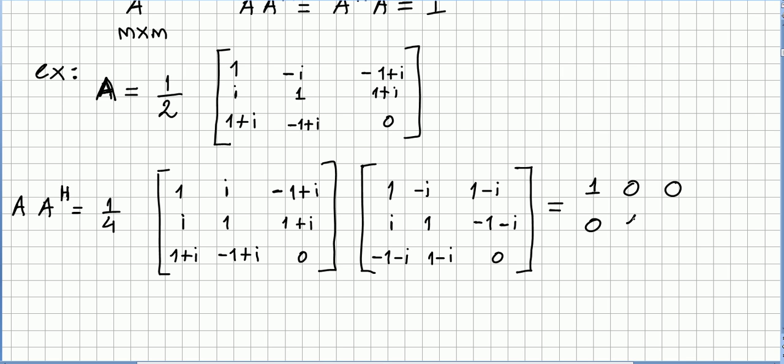And it's more or less obvious. It's a simple quick calculation to get the identity here. So A times A Hermitian we get the identity. So we can say that this particular matrix A is unitary.